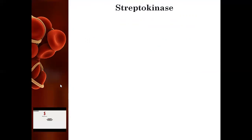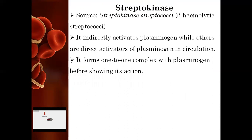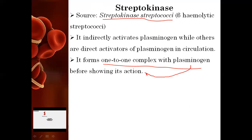We will begin with streptokinase. The name itself suggests it is coming from the source of streptococci — which is a beta-hemolytic streptococci that has a tendency to break down heme. It indirectly activates the plasminogen: it first forms a one-to-one complex with the plasminogen, and after forming this complex, it shows its action of getting activated by the plasmin and then cuts down the fibrin material. So it is an indirectly acting drug.